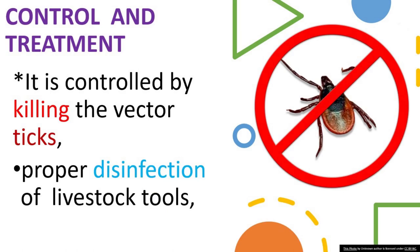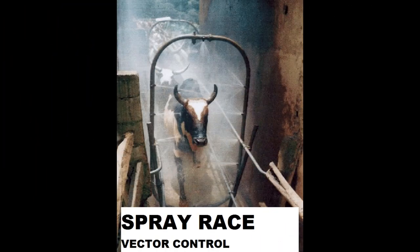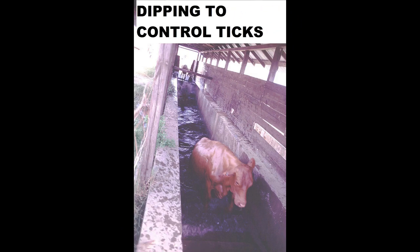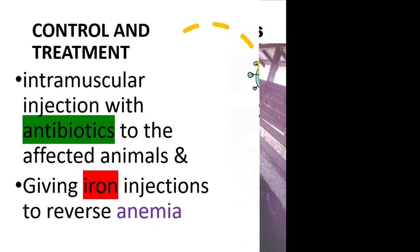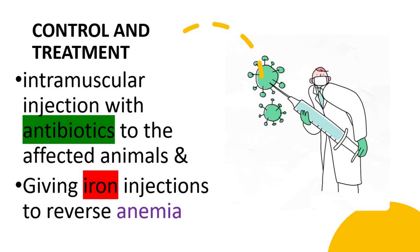Control and treatment: it is controlled by killing the vector ticks, and through proper disinfection of livestock clearing tools. Treatment involves intramuscular injection with antibiotics to the affected animals and giving iron injections to reverse anemia.